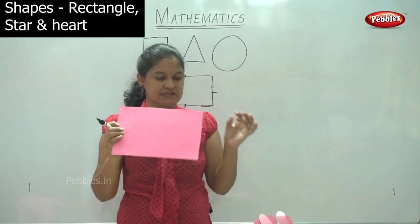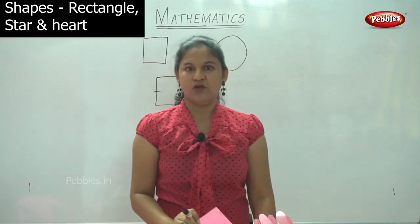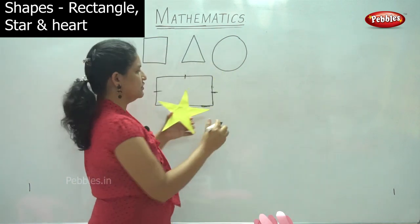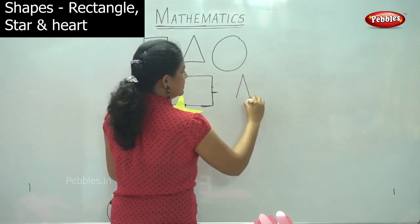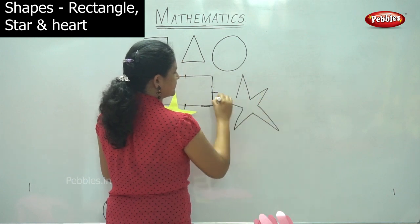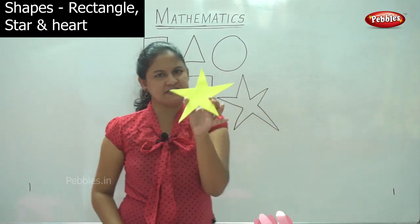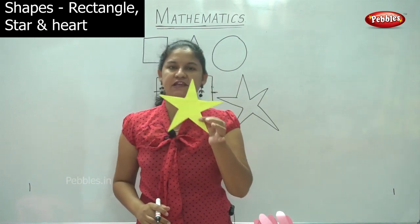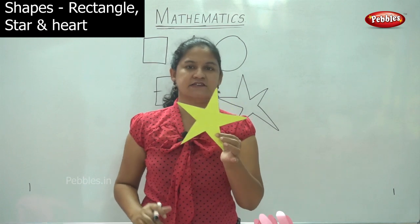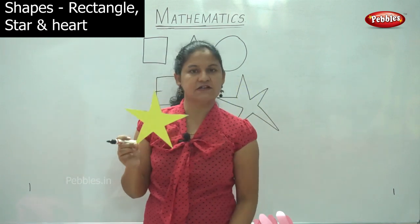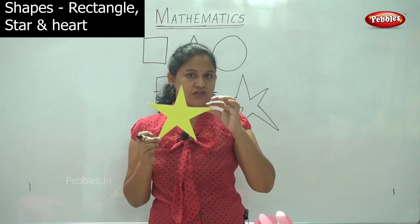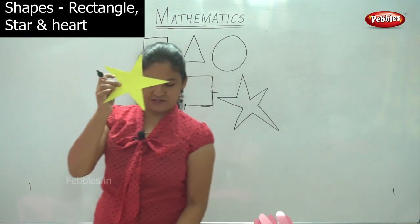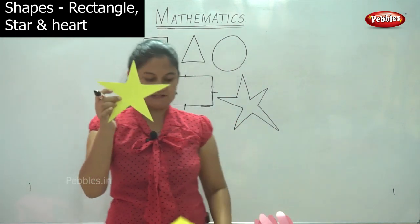Next we will move on to the next shape which we love to see — it is your star. You can see these are all different shapes. This is your star. Where do we see the star normally? Every day we see it in the sky; it only appears at night and it is quite bright. During Christmas we hang it in our houses. This is the star.